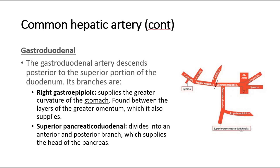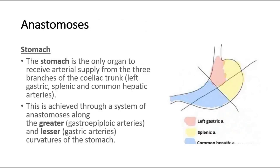For anastomosis, the stomach is the only organ to receive arterial supply from all three branches of the celiac trunk — the left gastric, splenic, and common hepatic arteries. This is achieved through a system of anastomosis along the greater and lesser curvatures of the stomach.